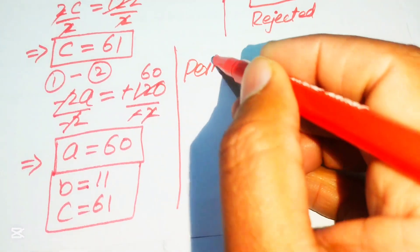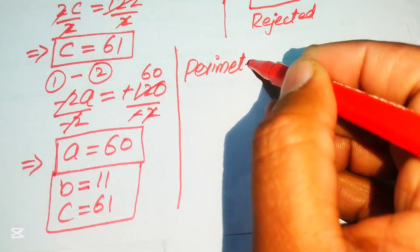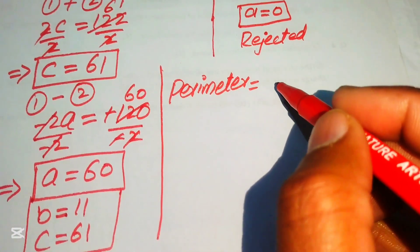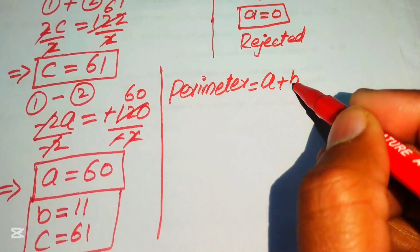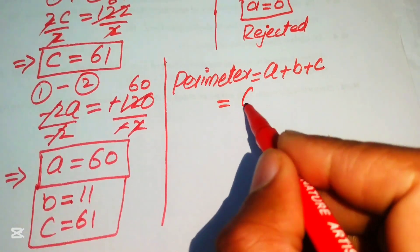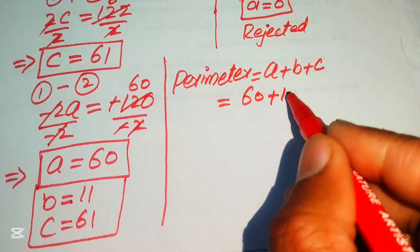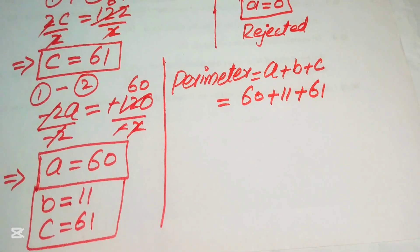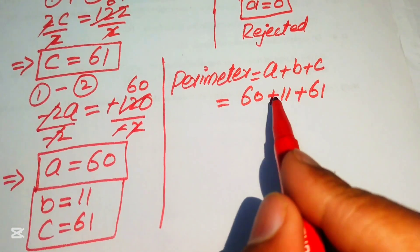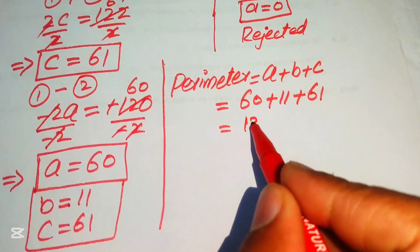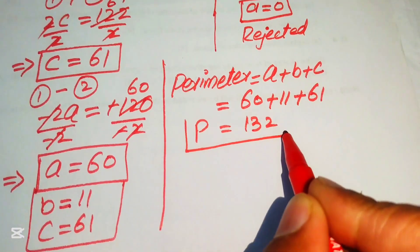The perimeter of the right triangle is the sum of all three side lengths. We have a = 60, b = 11, and c = 61. Adding these together: 60 + 11 + 61 = 132. So the perimeter of the given triangle is 132.